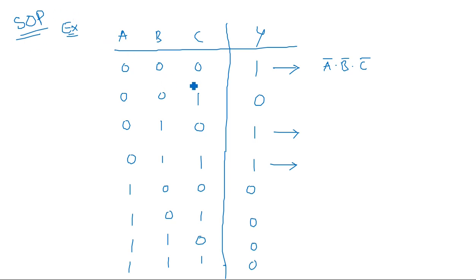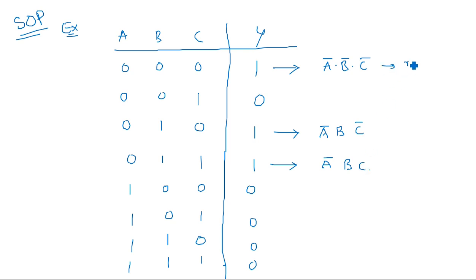POS is different from SOP. Looking at the ones in the output, we have three outputs equal to 1. The expression for (0,0,0) — where all three are complemented — is Ā̄B̄C̄. For (0,1,0), B is 1 so it stays, giving ĀBC̄. For (0,1,1), the expression is ĀBC. So by binary value, these are m0, m2, and m3 — the three min terms where the output is 1.